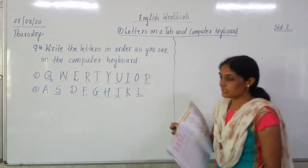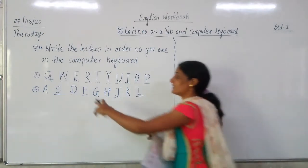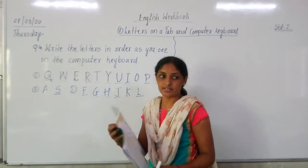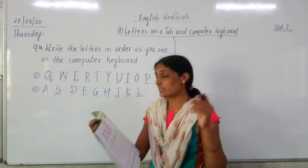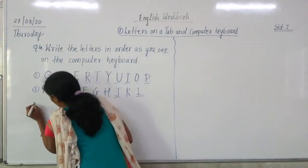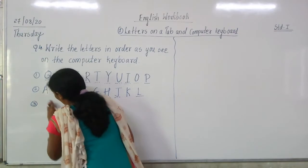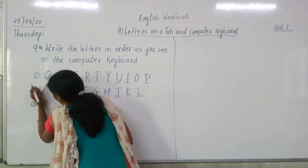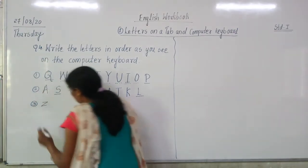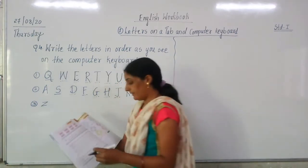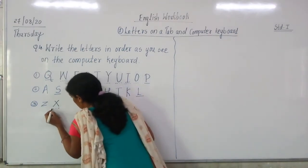Have you got it? In this way we have completed the second line of letters. Now the third line starts with Z. We are going to study it with Z. After Z on the computer keyboard is X.